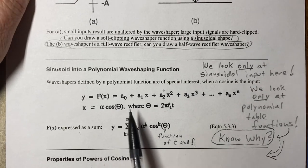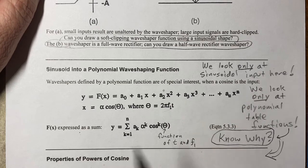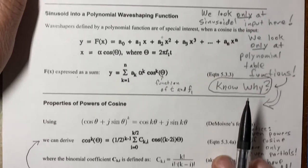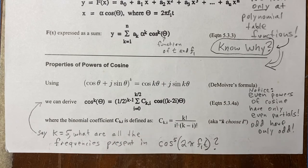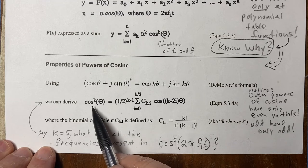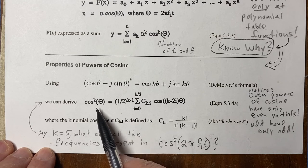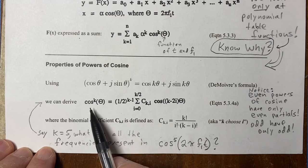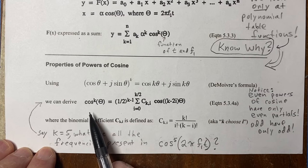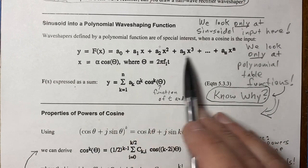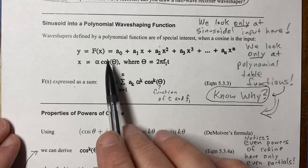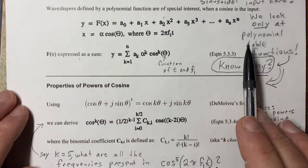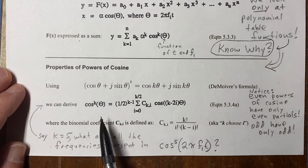If you look at the polynomial, it's taking different powers — squared, cubed, all the way to the nth power of the input. If you only have sinusoidal input, this is very important: we know something about cosine to the kth power. Because we know that, it makes sense to use a sinusoid as input and a polynomial function. What comes out of the polynomial is a sum of cosine to the k, where k takes different values: 2, 3, 4, and so on.